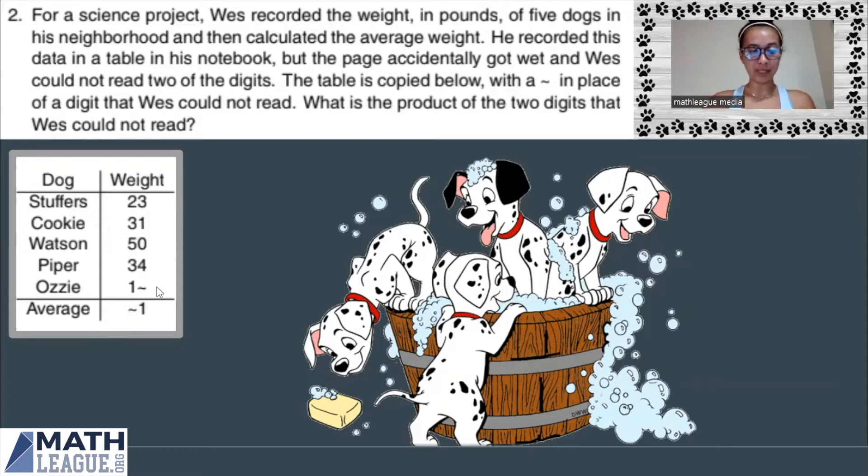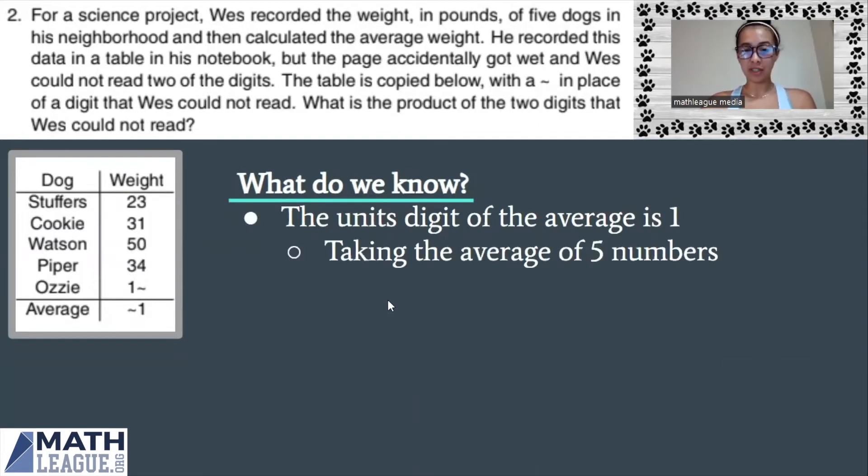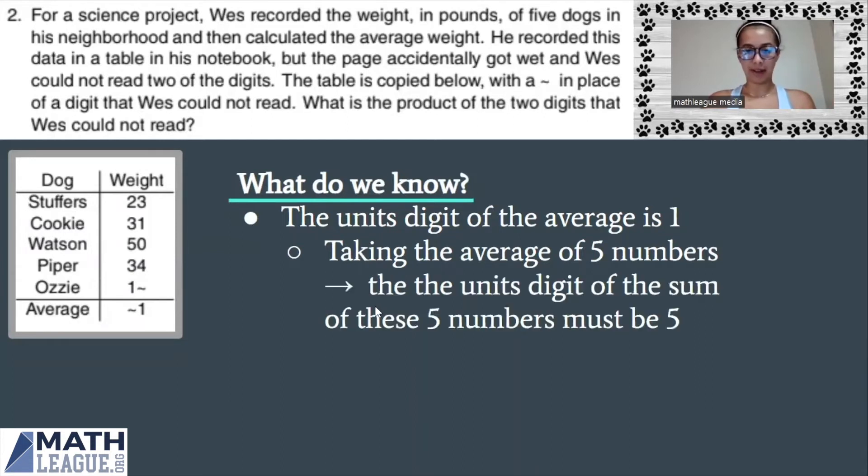We are looking for the units digit of Ozzie's weight and then the tens digit of the average weight. So let's start by thinking about what do we know? We know that the units digit of the average is one. And since we have five dogs that we're taking the average of, that means that together the sum of these five weights must end in a five.